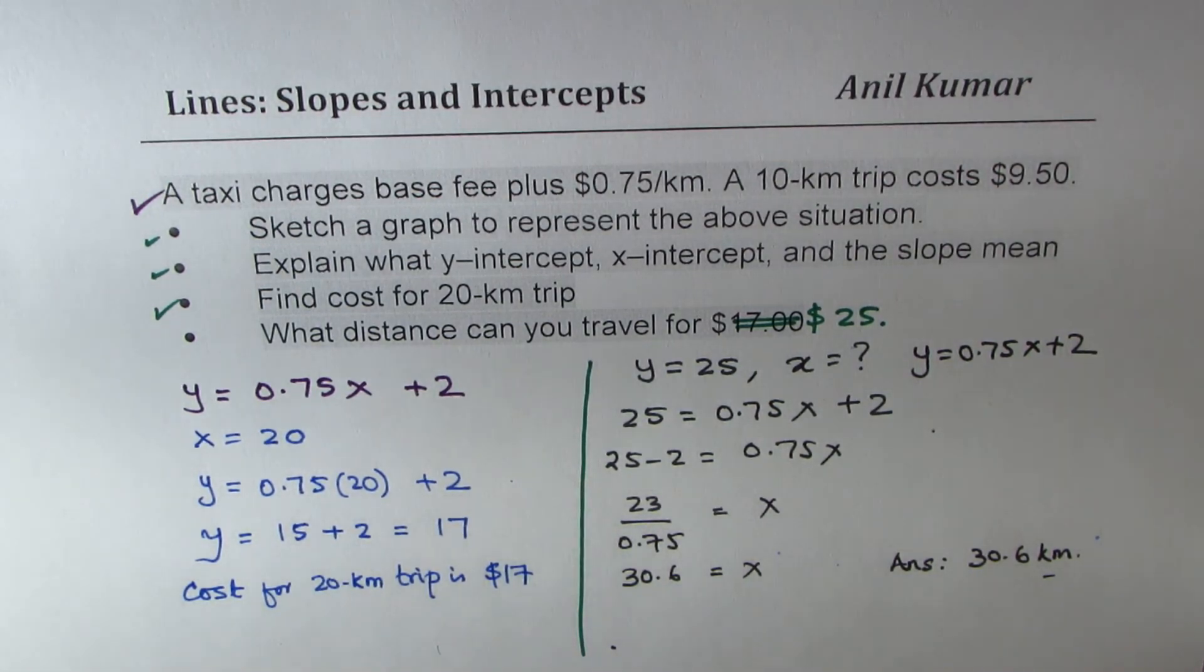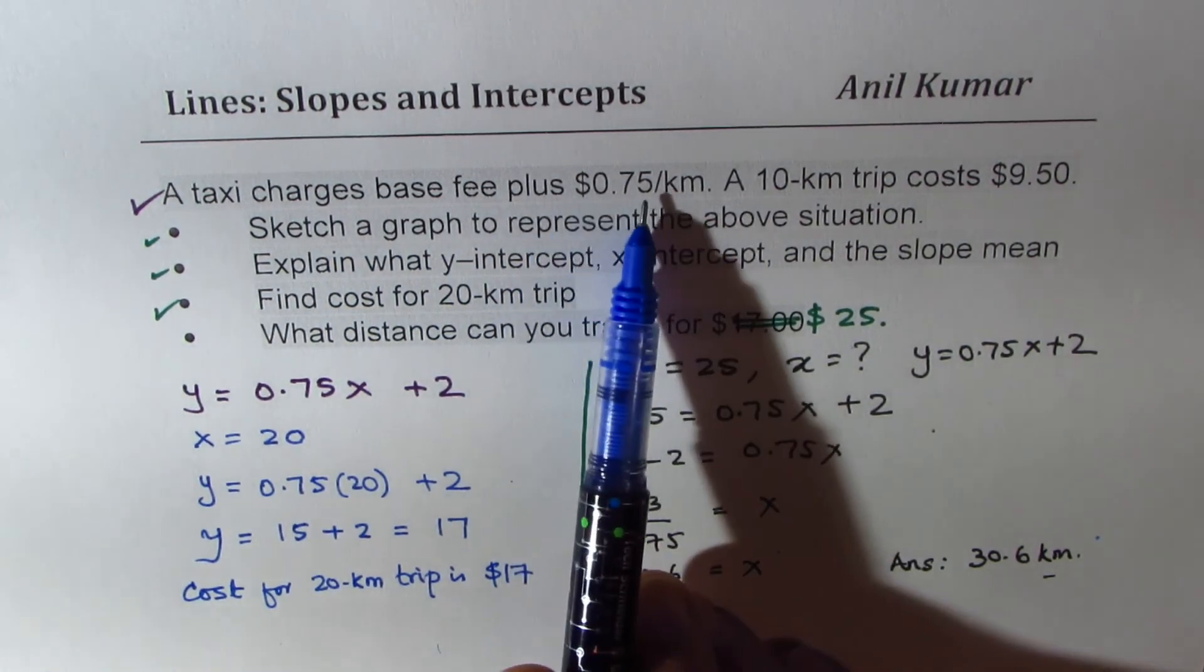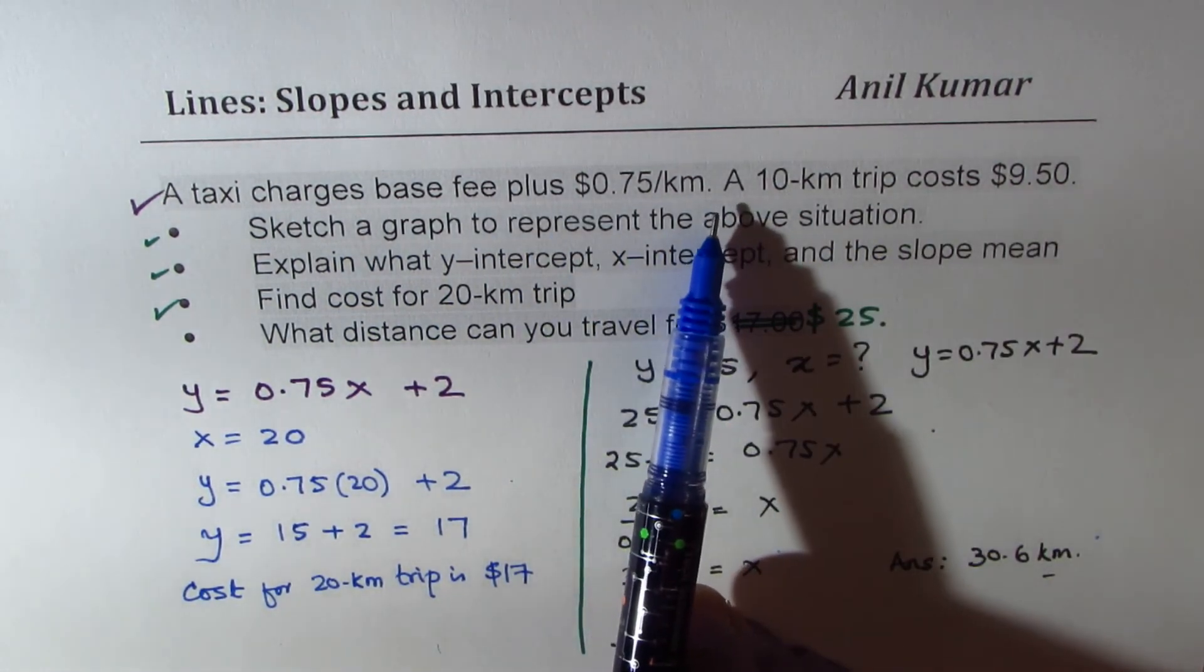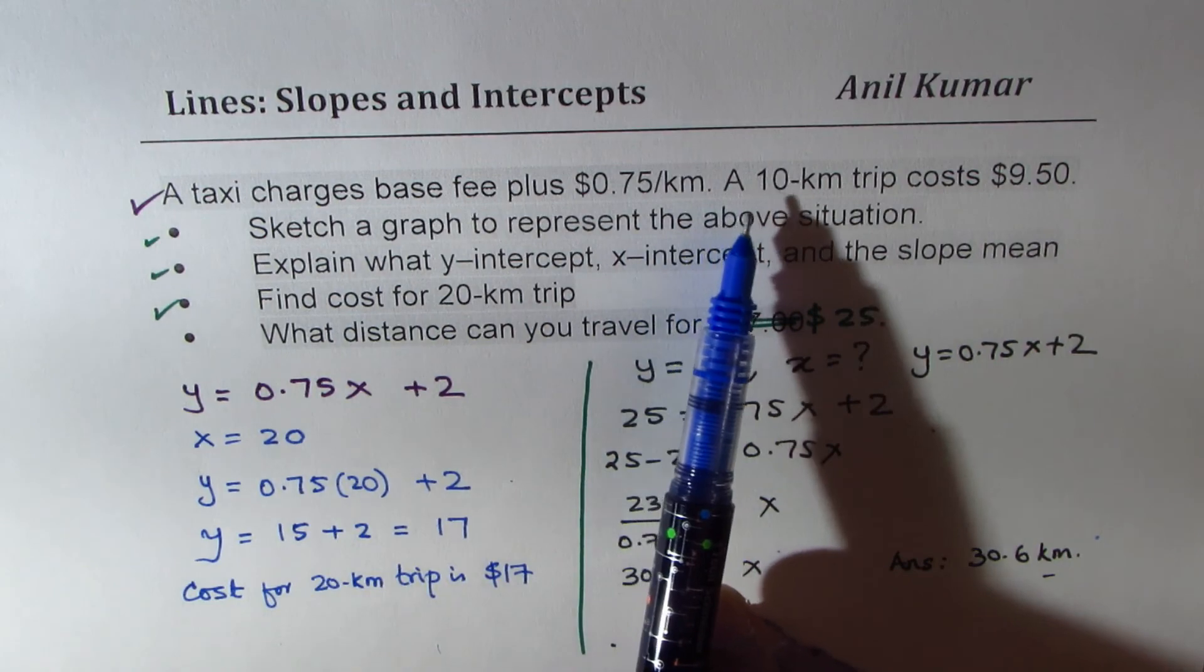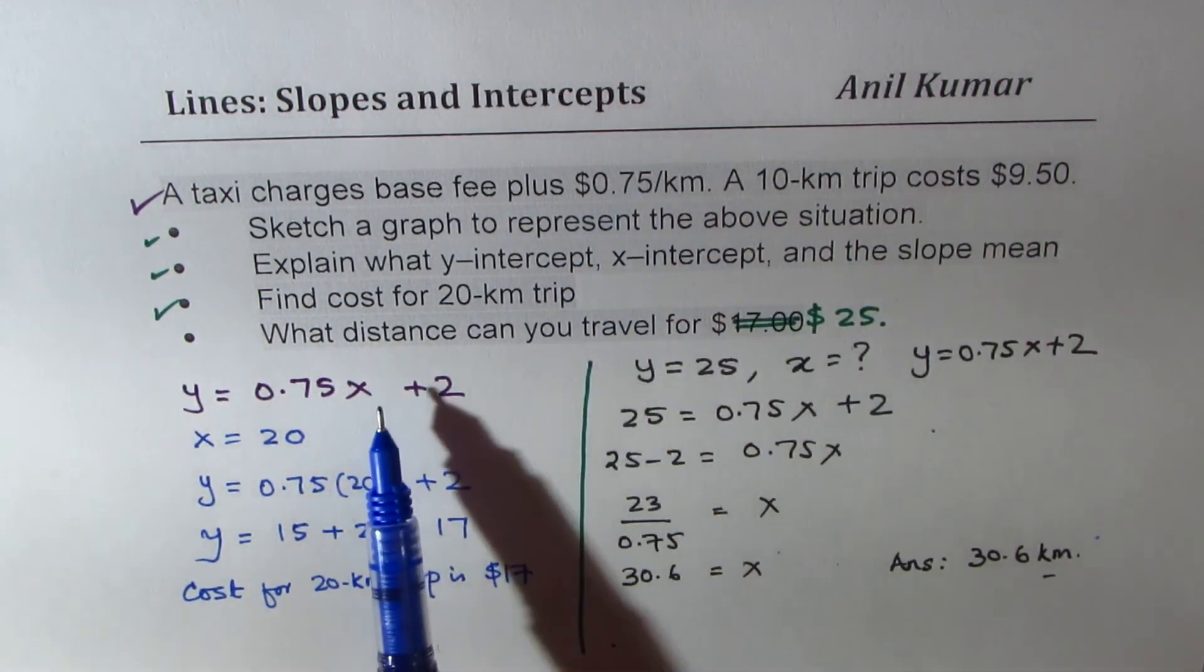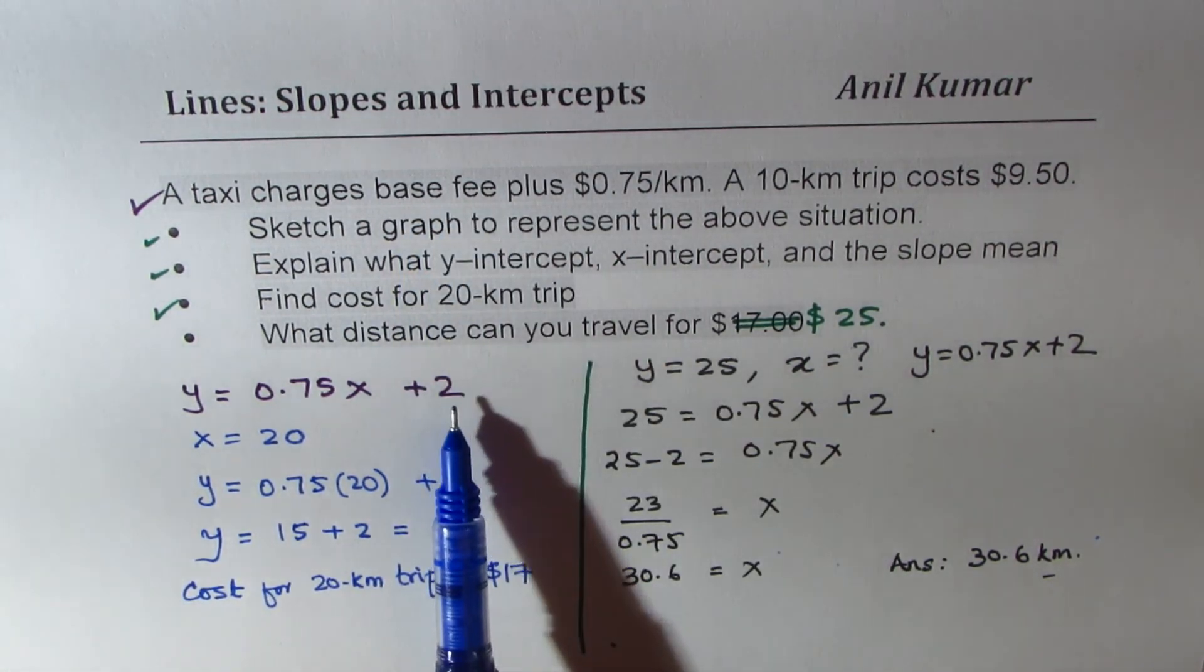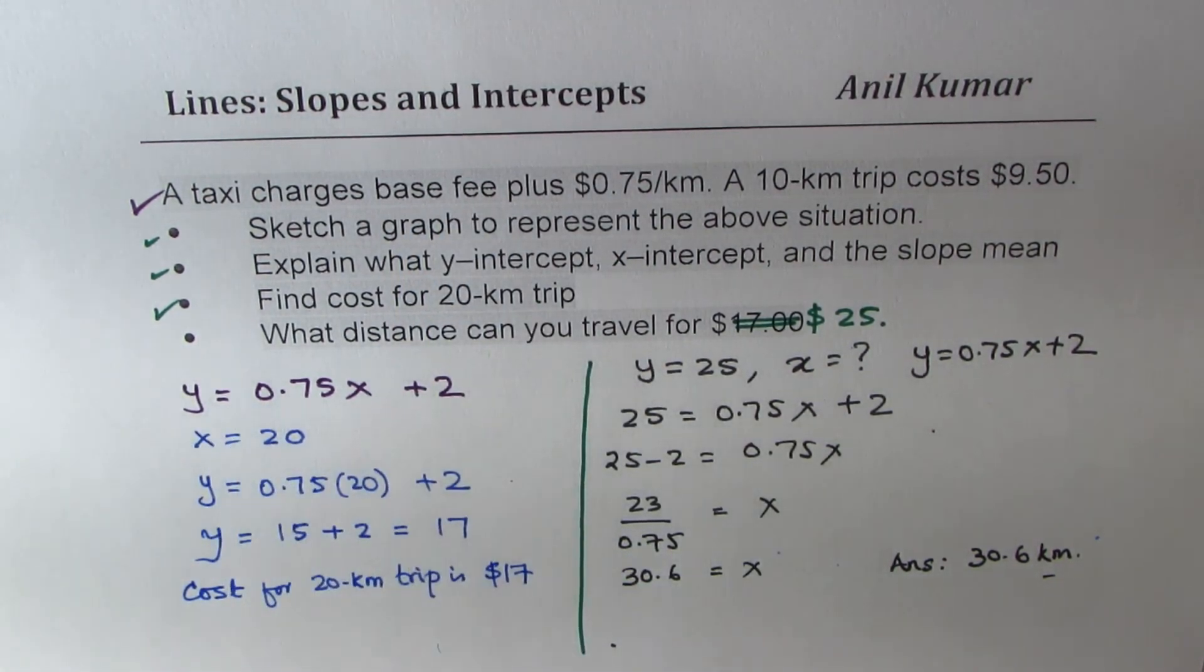So that is how you could actually answer such questions. I hope the basic concept is clear. All such real life situations could be modeled as a linear function, linear relation as we did. Now here the rate corresponds to slope, base cost is the y-intercept and that helps you to get the equation. Feel free to write your comments and share your views. If you like and subscribe to my videos, that'd be great. Thanks for watching and all the best.